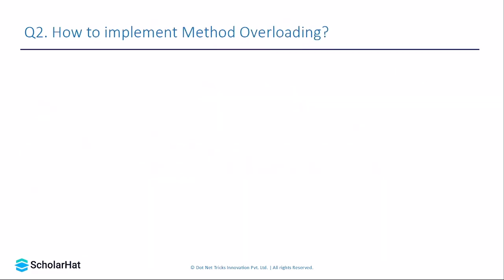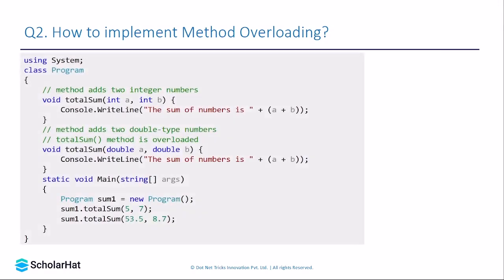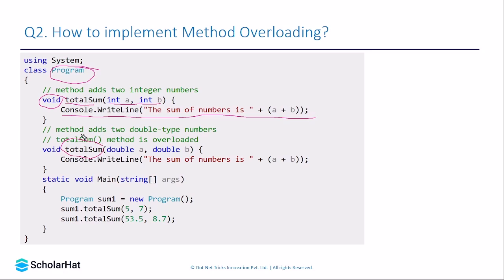Now let's see how method overloading or compile-time polymorphism is implemented in C#. Here we have created a class called Program, which has a method named TotalSum. The return type is void, meaning it doesn't return anything, and it accepts two integer parameters, int a and int b. Inside the method, it prints the sum of those numbers. In the same class, we have another method also named TotalSum.